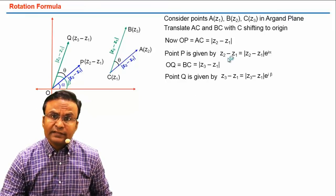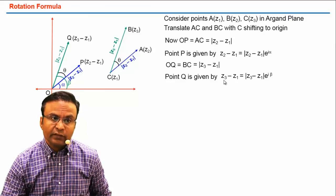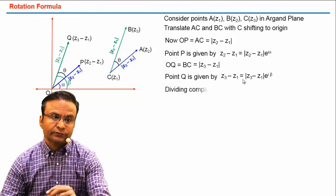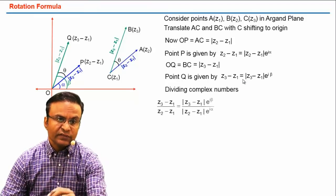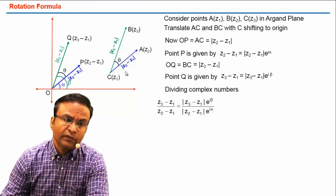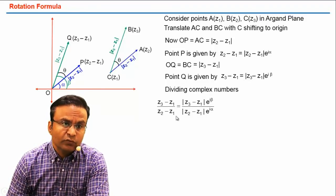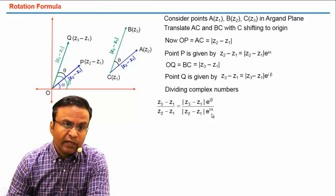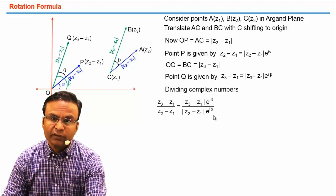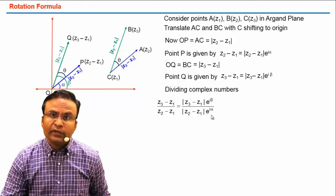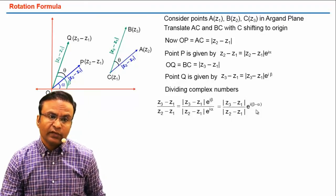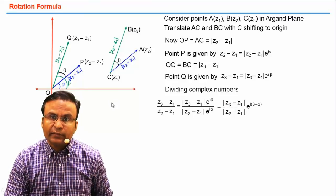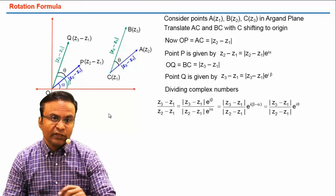Now let's divide these two complex numbers — we divide the complex number of point Q by the complex number of point P. So we have: (z3 − z1) / (z2 − z1) = (|z3 − z1| / |z2 − z1|) · e^(iβ) / e^(iα). Simplifying, e^(iβ) / e^(iα) = e^(i(β − α)). And from the diagram, beta minus alpha is theta.